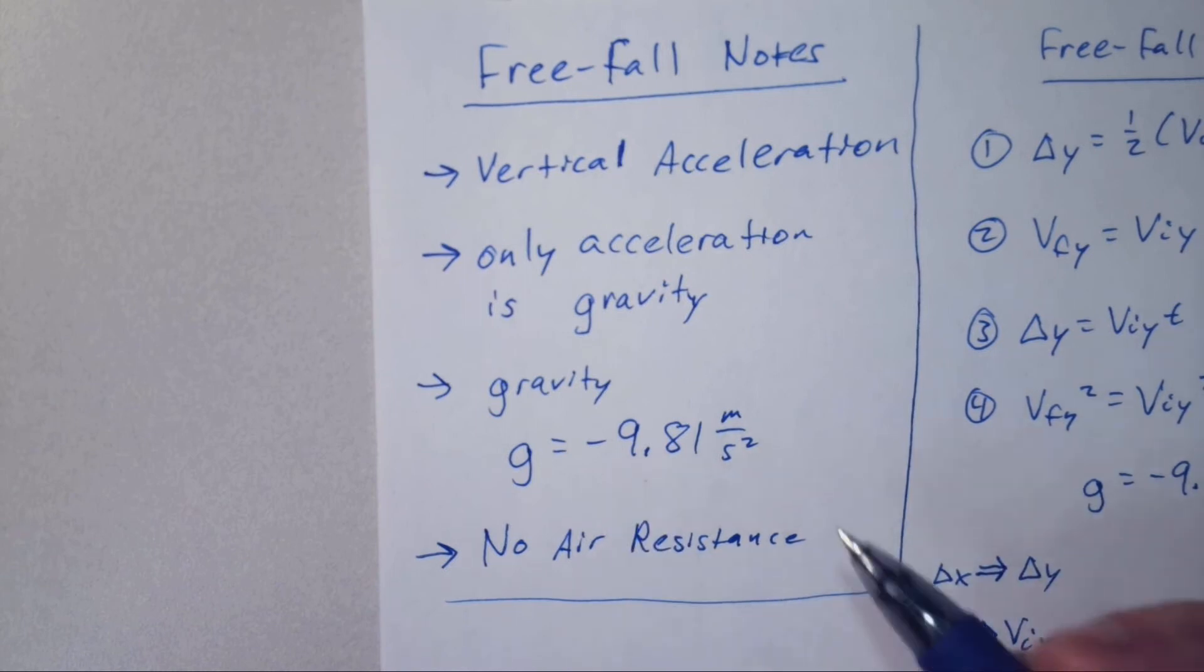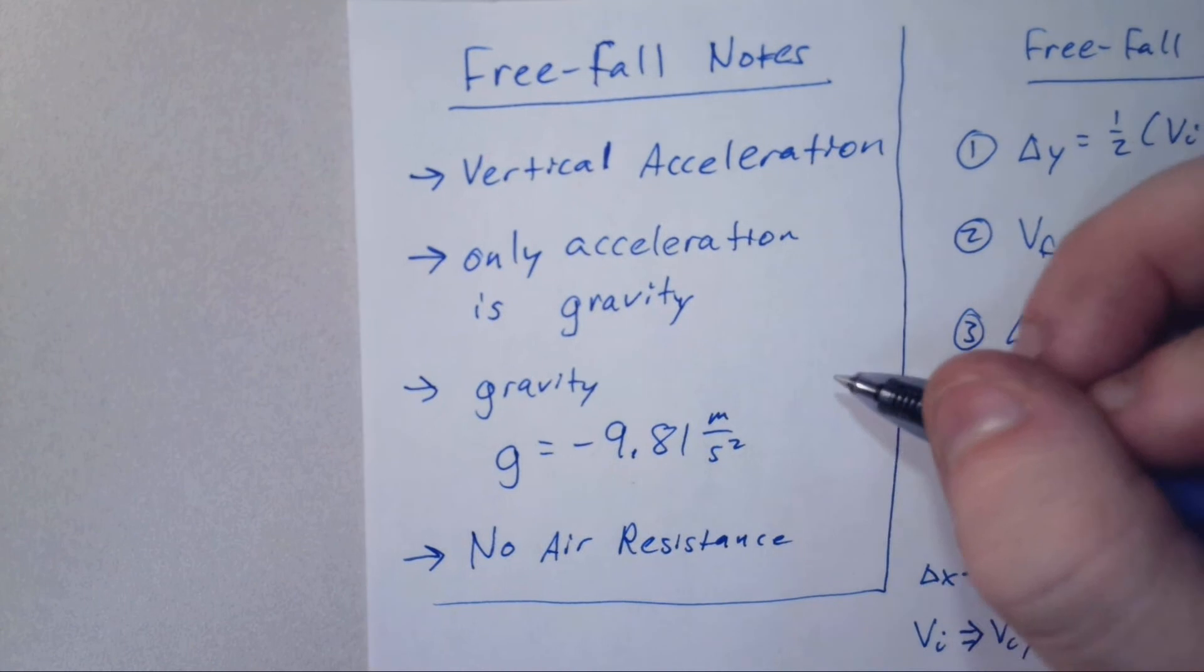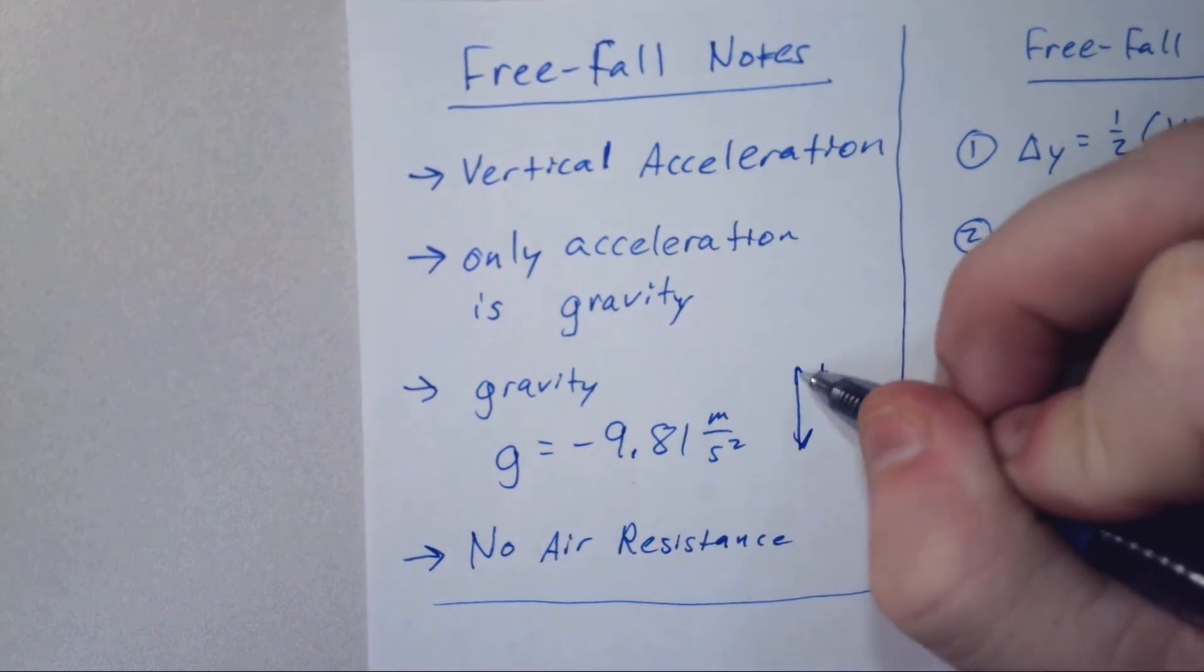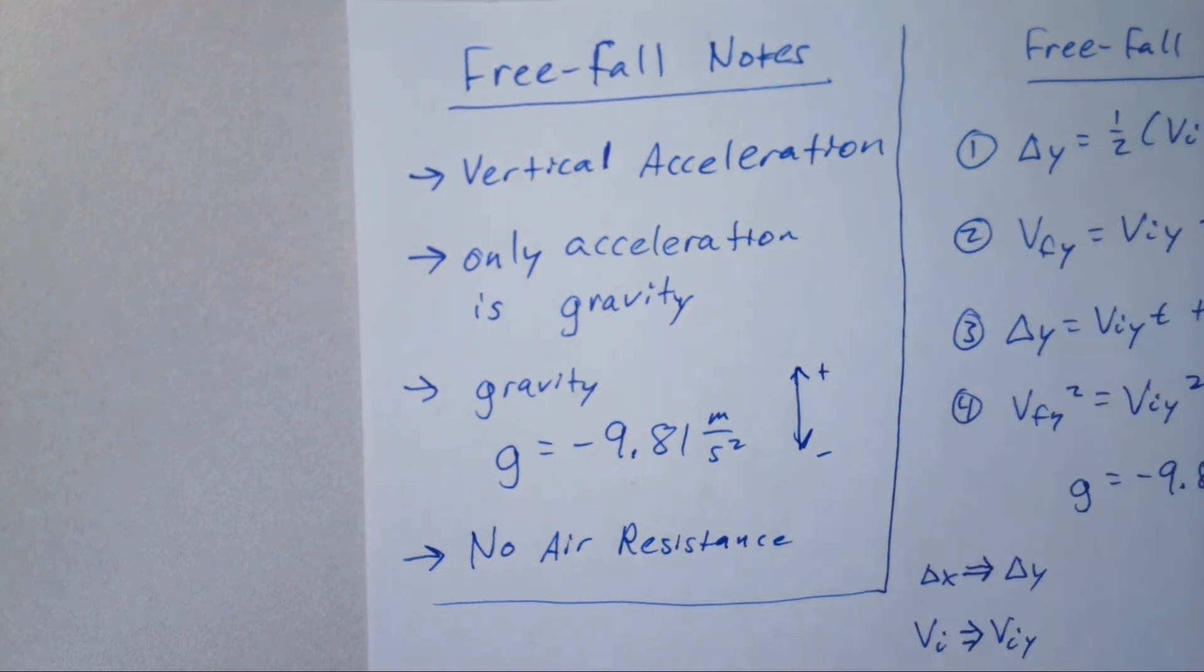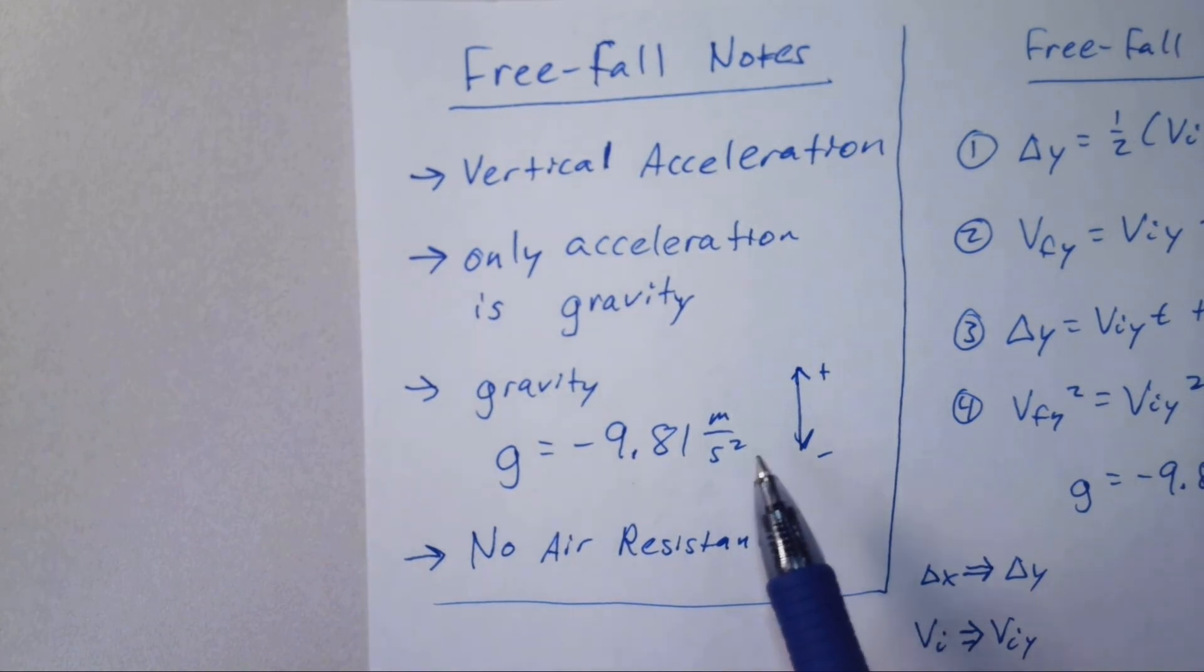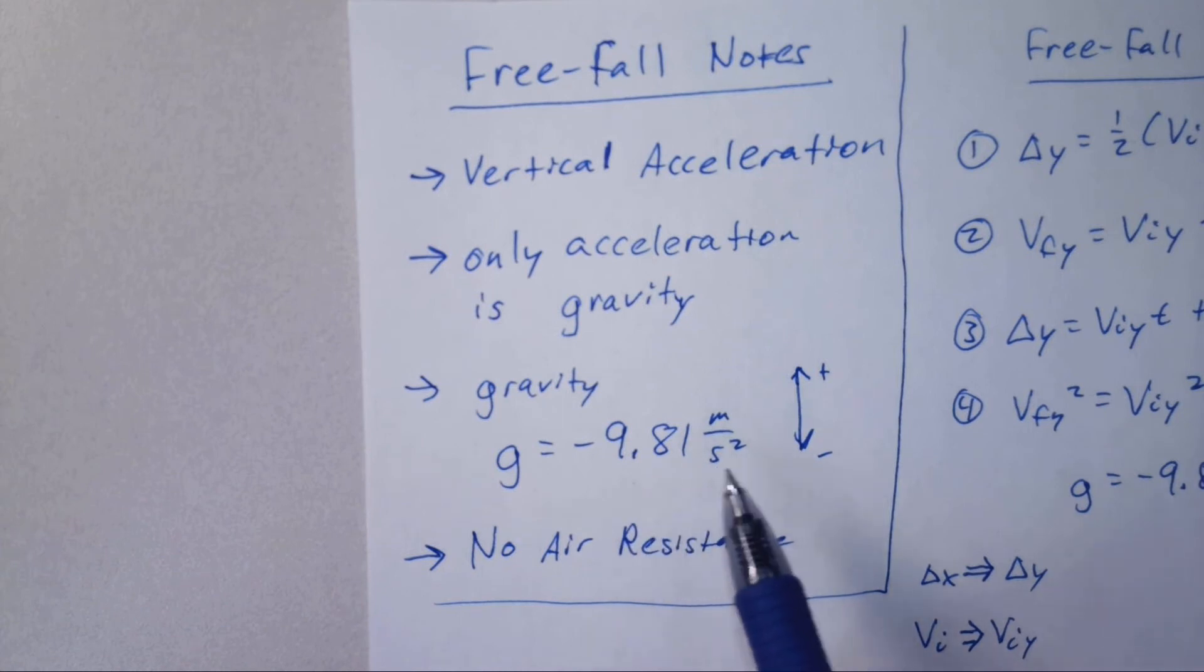We have to remember what meters per second squared means and what the negative sign means. It doesn't mean less than zero. In terms of vertical direction, up is positive and down is negative. So the acceleration is 9.81 meters per second squared downward. Meters per second per second means that every second, gravity causes an object to speed up by 9.81 meters per second downward. After the first second: 9.81 meters per second. After the second: 19.62 meters per second downward, and so on.